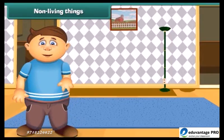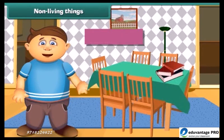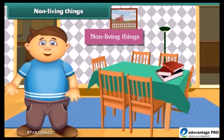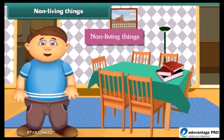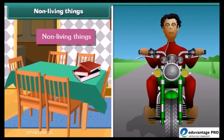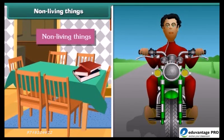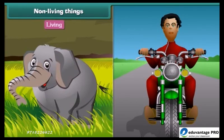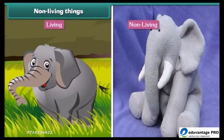Now let's learn about non-living things. They do not show the features of living things. You will be surprised to know that your father's bike is also a non-living thing — it can move only when it has petrol in it. Unlike living things, all non-living things do not show growth or reproduction.